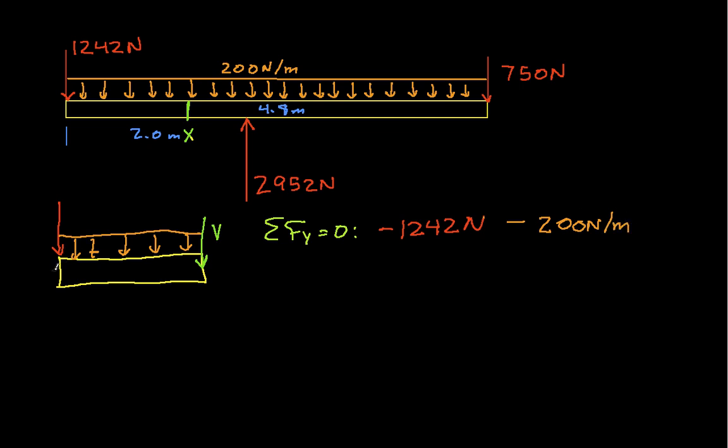we will put the minus 1242 newtons. And then we'll subtract this distributed force, and it's 200 newtons per meter, over a distance of, from 0 out here to x. So, it's over a distance of x meters. And then we would have minus v, and this is equal to 0.